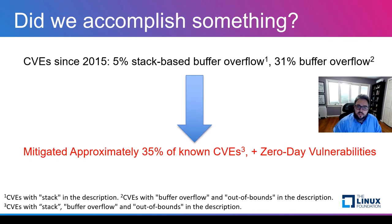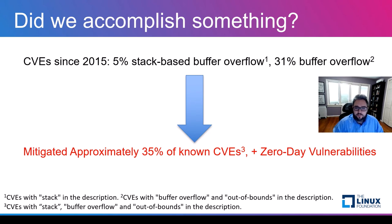Now that the patches are included upstream, we can ask what we accomplished. Looking at the CVEs, a total of 35% of them are buffer overflows. So by using control flow integrity, we are mitigating about one third of the vulnerabilities and making integrity attacks much more rare. On top of that, we are also protected against zero-day vulnerabilities at the same time.